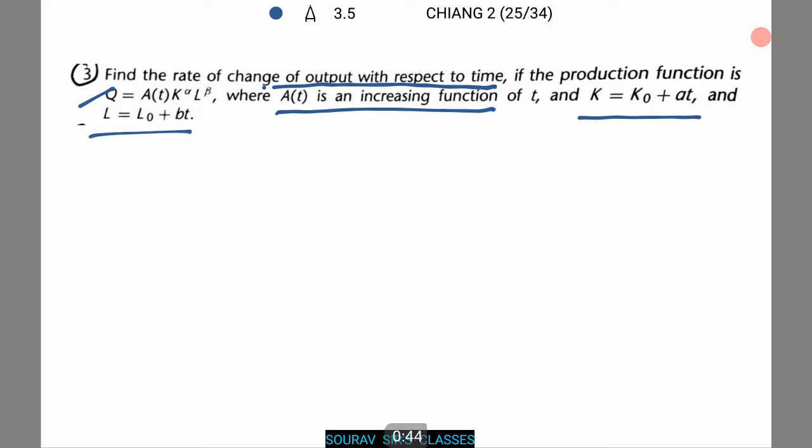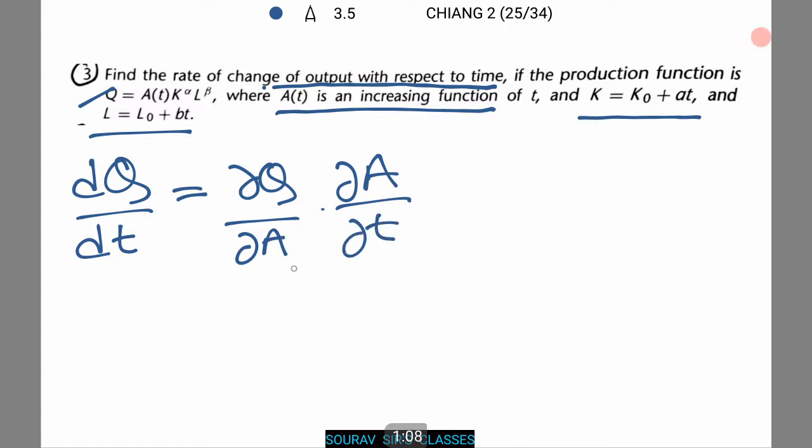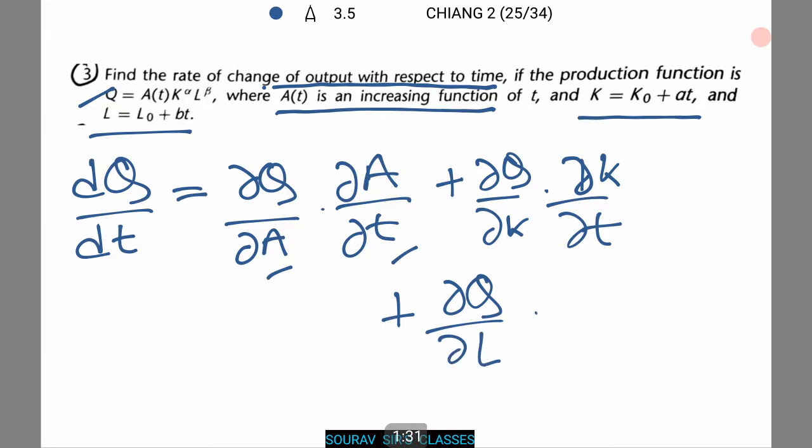Let's see how to do this. The rate of change of output with respect to time is dQ by dt. Now we can find this by del Q by del A into del A by del t. That is we will find the rate of change of output with respect to A and rate of change of A with respect to time, plus dQ by dK into dK by dt similarly plus dQ by del L into del L by dt.